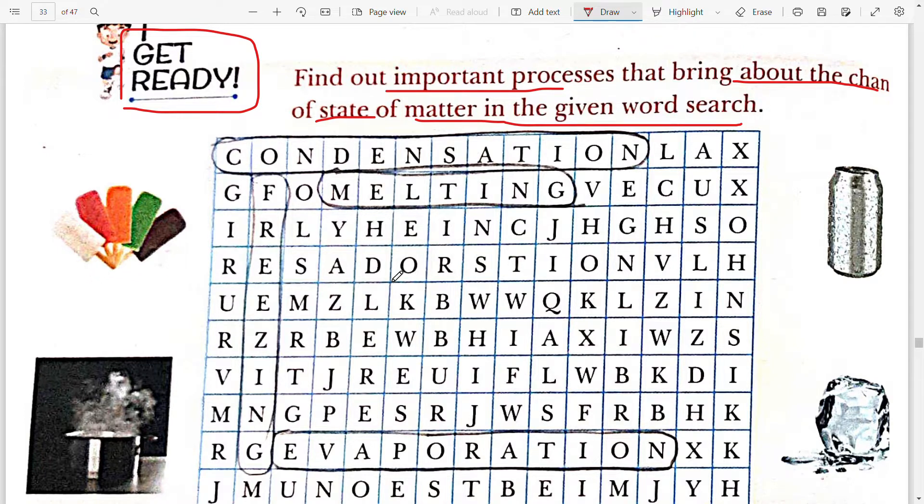Very first, the picture is of ice cream which is in the freeze state. So the process is freezing. You can see the word here, freezing. Next is a can with water droplets on the surface. This process is condensation.